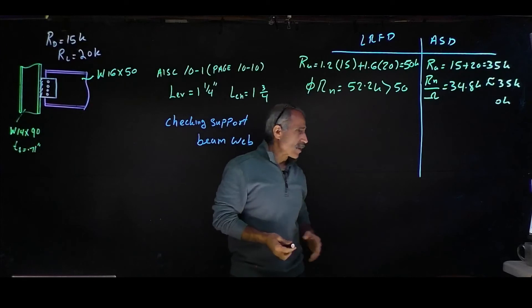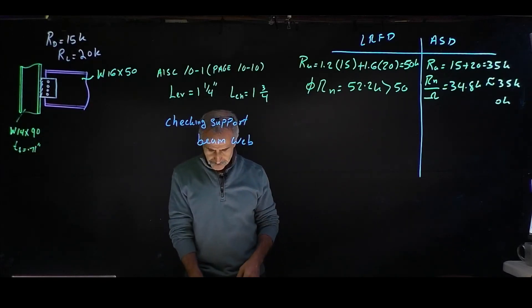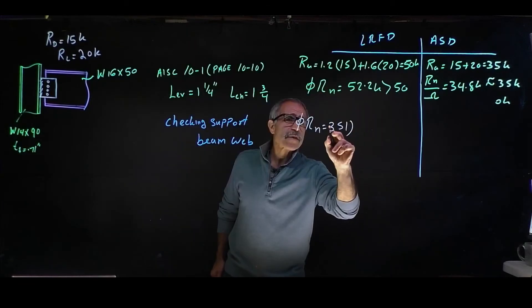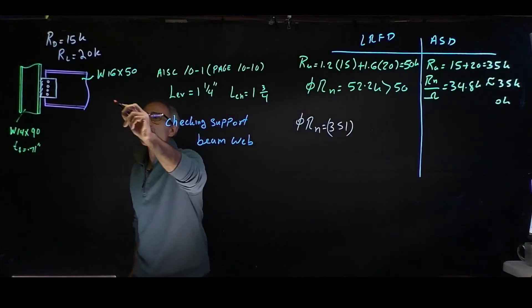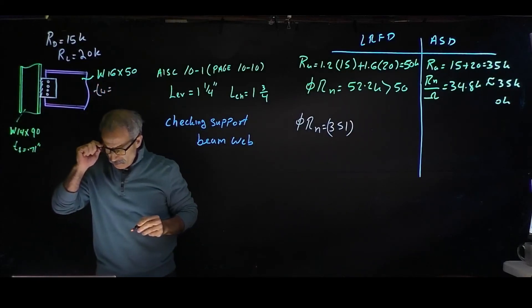Going back to that table at the bottom, which is uncoped, our number is going to come out to phi times Rn, which comes out to that number we have down there for LRFD, 351, multiplied by the thickness tw.